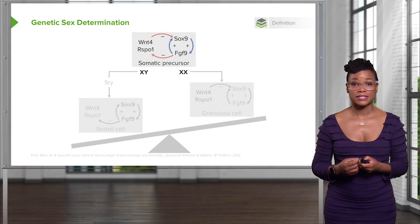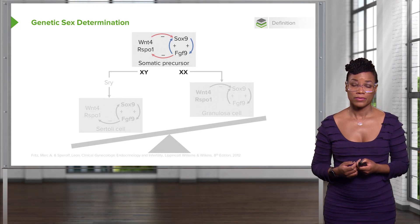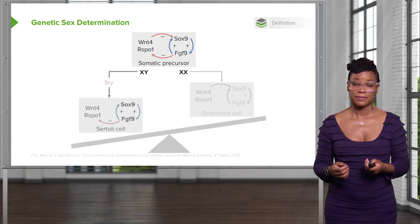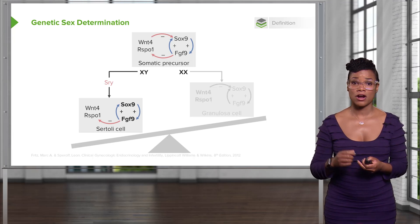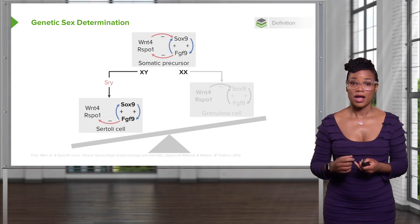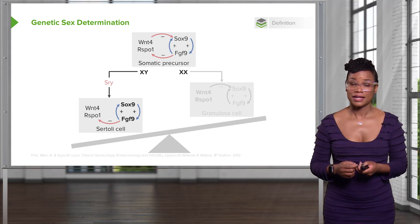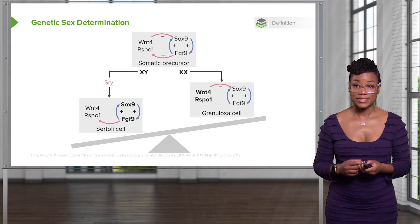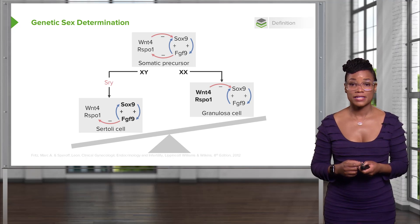Genetic sex determination is made by XY in the male or XX in the female. Certain genes are upregulated or downregulated depending on the presence of a Y chromosome. The Y chromosome encodes SRY. SRY will downregulate the genes important for female development — Wnt4 and RSP01 — and will upregulate SOX9 and FGF9 in the Sertoli cells. In the female, SOX9 and FGF9 are not present; therefore, Wnt4 and RSP01 will be upregulated, leading to a female phenotype.